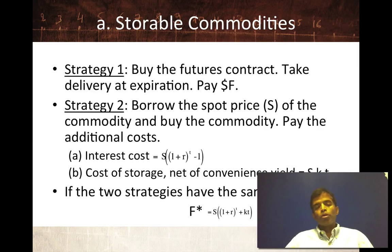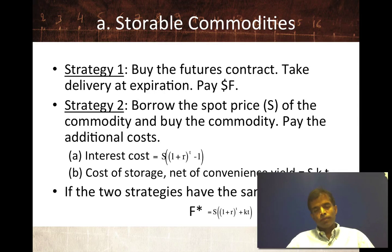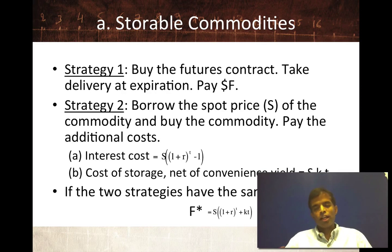Here's the second strategy: you borrow the spot price of the commodity — oil, gold, whatever it is — and buy the commodity today. Then you store it. There are two costs you're going to face. First, because you borrowed the money to buy the commodity, you have to pay interest on that price. So if the spot price is S and the interest rate is R, you'll pay interest for the life of the futures contract — that's the interest cost. The second cost is the storage cost. With some commodities, the person you store the commodity with might actually get some benefit from the storage, and that's netted out as the convenience yield, let's call it K — a percentage of the spot price specified as an annual cost, scaled by T for the contract period.